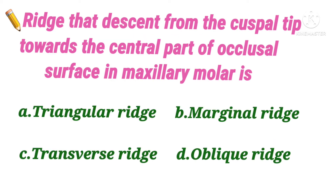Second question: which ridge descends from the cuspal tip towards the central part of the occlusal surface in a maxillary molar? Option A triangular ridge, B marginal ridge, C transverse ridge, D oblique ridge. The answer is option A, triangular ridge, because it is defined as a ridge that descends from the cuspal tip towards the central part of the occlusal surface of posterior teeth.